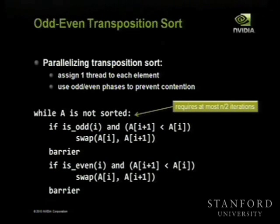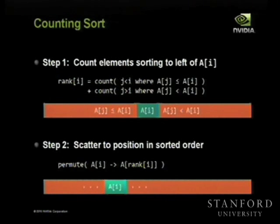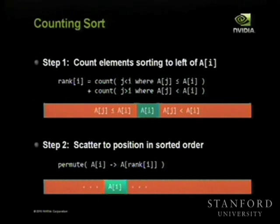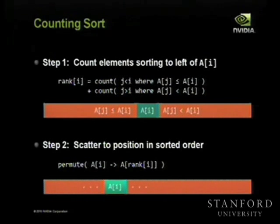We'd like to do better than quadratic. The way I want to focus on is based on counting and doing radix sort. Here's another very simple sort I'll call counting sort: for every element in the array, count how many elements should be to its left in the sorted output. Once you know that, simply write the element into that position. This quantity — how many elements sort to my left — is what people often refer to as rank.